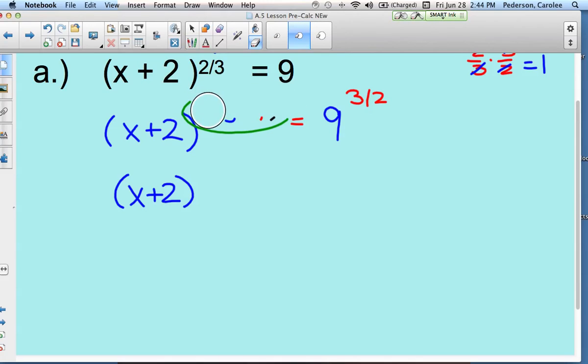Probably should write this a little bit nicer. Two-thirds times three-halves, you can see it better. So it's three, three, two, two, and they all cancel out to just being one.